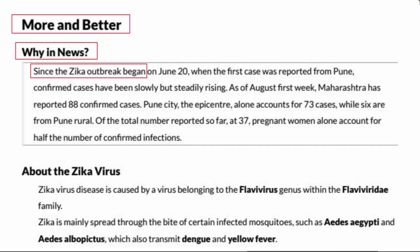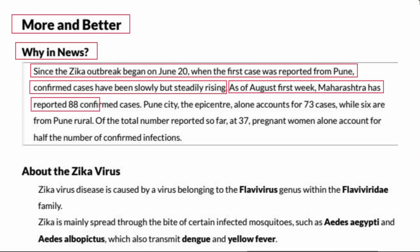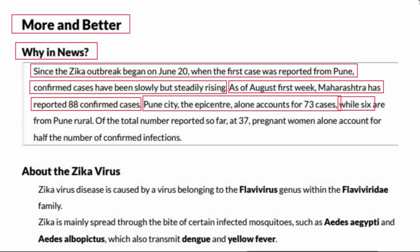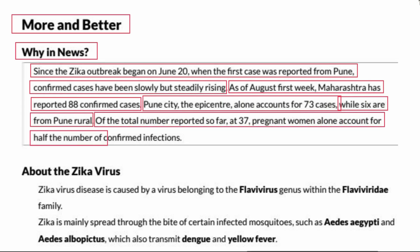Since the Zika outbreak began on June 20, when the first case was reported from Pune, confirmed cases have been slowly but steadily rising. As of the first week of August, Maharashtra has reported 88 confirmed cases. Pune City, the epicentre alone, accounts for 73 cases, while 6 are from Pune rural. Of the total number reported so far, 37 pregnant women alone account for half the number of confirmed infections.